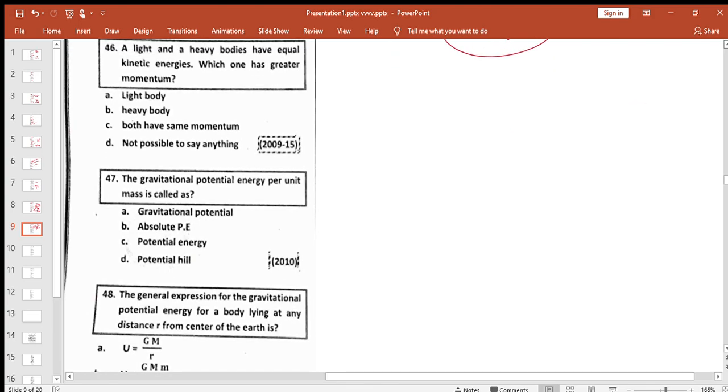A light and heavy body have equal kinetic energy. Which one has greater momentum? Momentum is directly proportional to mass. Whichever has greater mass has greater momentum, so option B is correct.